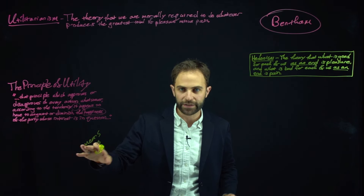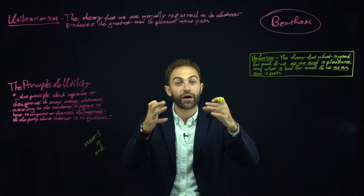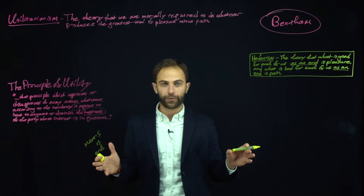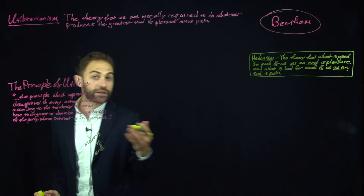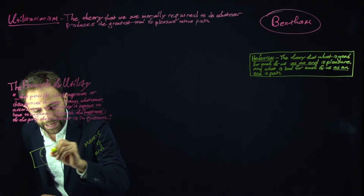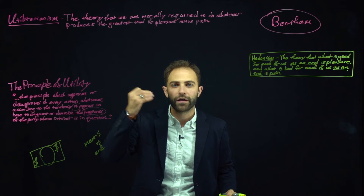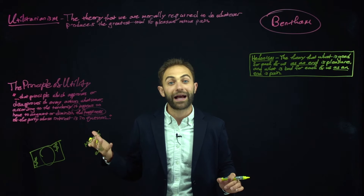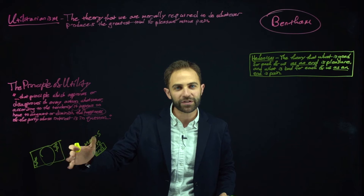If something is good as a means, then it's good for getting something else — it's only good because it gets you that second thing. The example I always get from students, and it's a good one, is money. Money is good as a means because money is only good for spending. Just having the piece of paper or the coin or the numbers in your electronic bank account isn't good by itself. It's not good as an end. Something is good as an end if it's good by itself just to have it, not because it gets you something else.